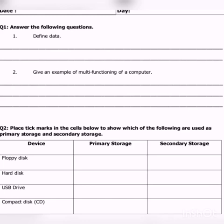Question number two: give an example of multi-functioning of a computer. We have already studied what multi-functioning of a computer means. Data is what we feed into the computer — whatever we give it as input is called data. Multi-functioning means a computer that can perform many functions all at the same time. We will do these two questions first, then move on.